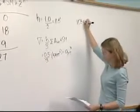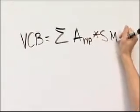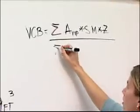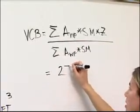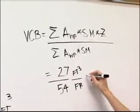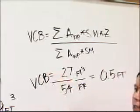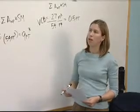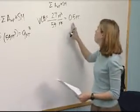For VCB, that is the summation of water plane area times Simpson's multiplier times Z, which is 27 cubic feet, divided by the summation of water plane area times Simpson's multiplier, which is 54 square feet. So 27 divided by 54 — cubic feet divided by square feet — gives you one half of a foot. That is your vertical center of buoyancy. Does it make sense? Since our vessel had a constant cross-section, the vertical center of buoyancy should be halfway up between the bottom of the vessel and the draft. Halfway up is one half of a foot — it checks out.